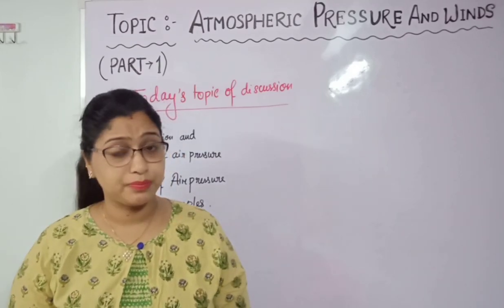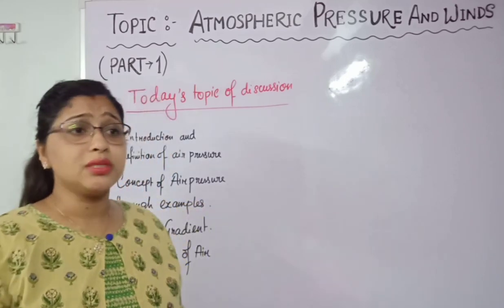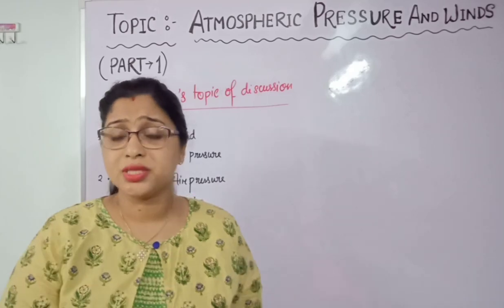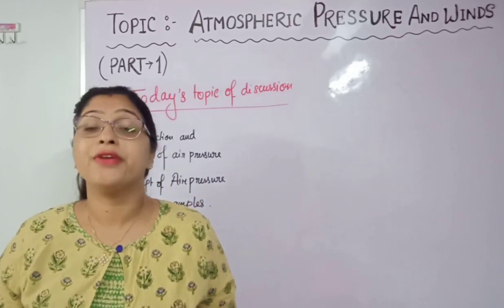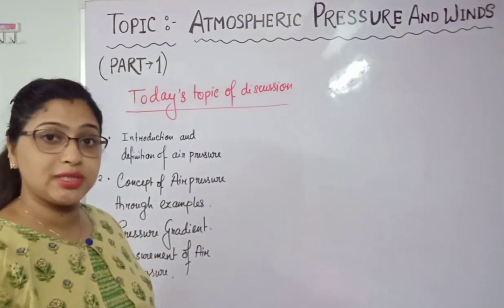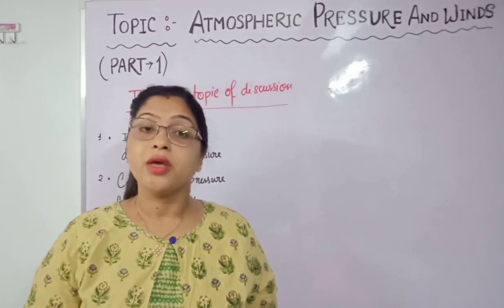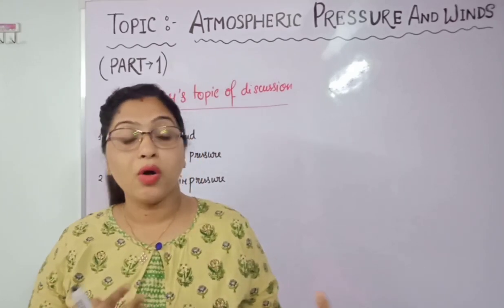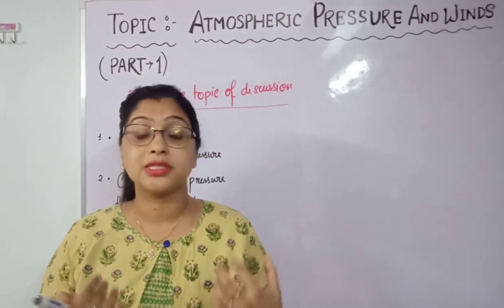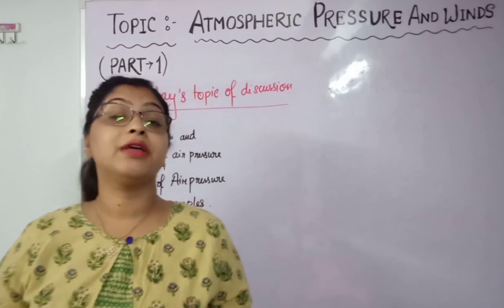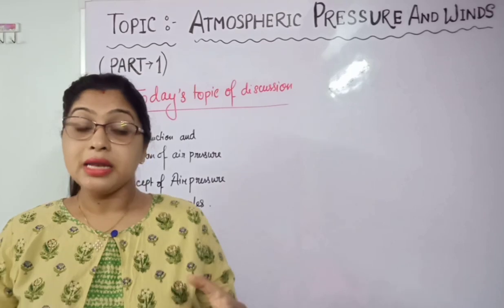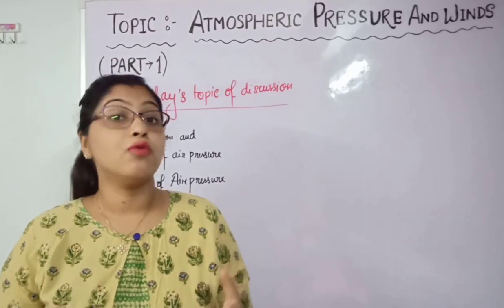Students, you might wonder: if air pressure is there, why can't we feel it? For that, I'm going to the next point and explaining through examples. We, as human beings, have blood pressure inside our body — that is why we cannot feel the pressure of the air outside. We cannot feel the pressure of the air, but when we move against the direction of the wind blowing, we can feel the pressure.